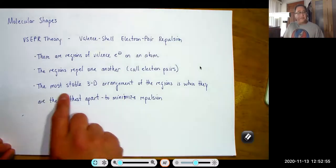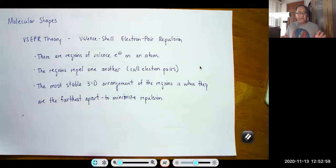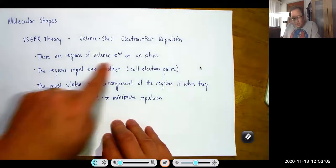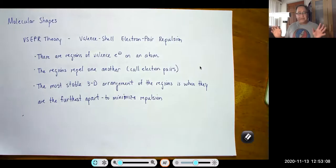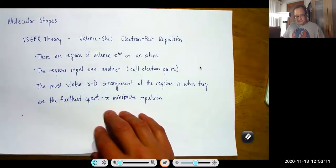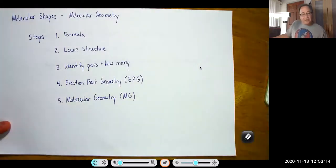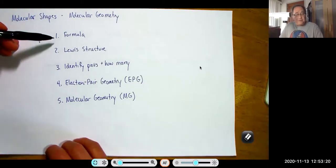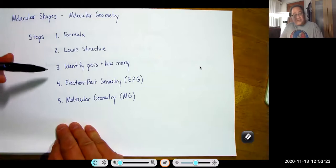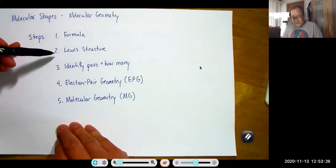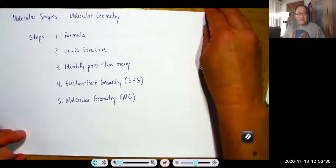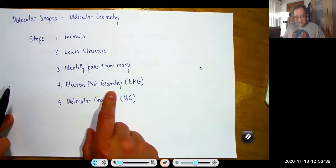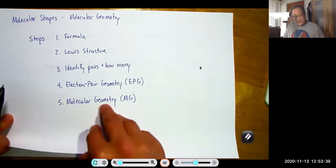The most stable 3D arrangement of the regions is when they are farthest apart to minimize repulsion. These regions are all on one atom, not on different atoms. To get the molecular shape, we go through these steps: first, you need the formula of the compound or polyatomic ion; then you get the Lewis structure; then you identify how many pairs or regions you have; then you get the electron pair geometry using VSEPR; and finally, you get the molecular geometry.